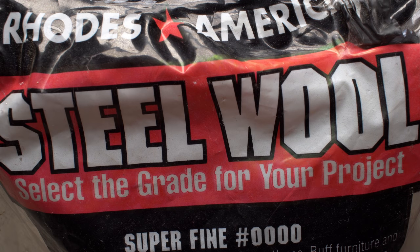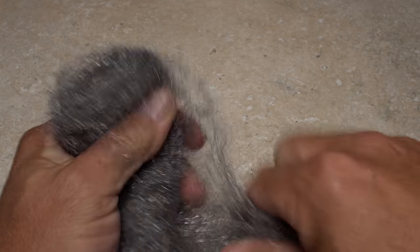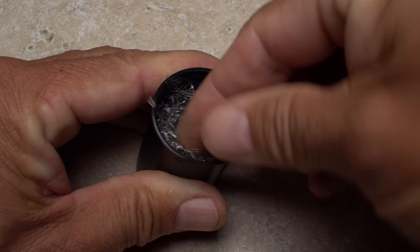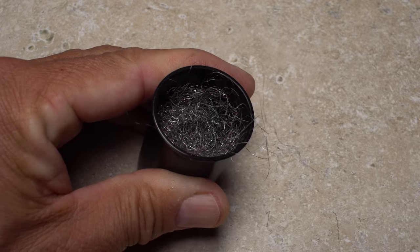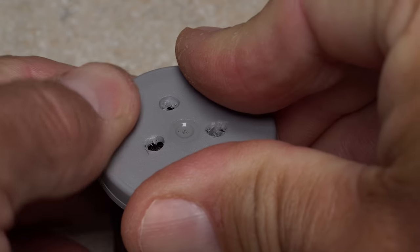Then, get hold of some steel wool. Unwrap a couple layers from one of the biscuits and tear or cut it free. Stuff the steel wool into the canister. Keep adding and pressing down until it's right up to the top, then replace the lid.